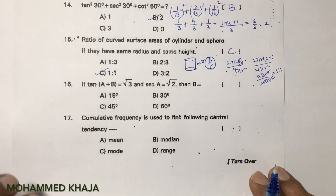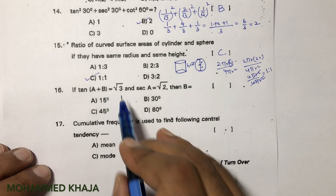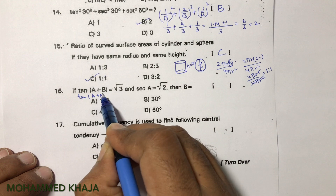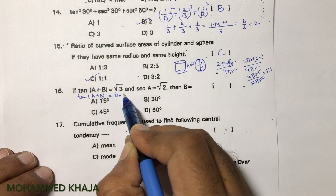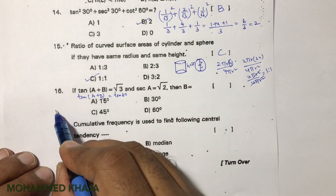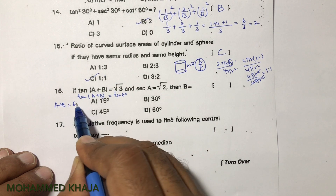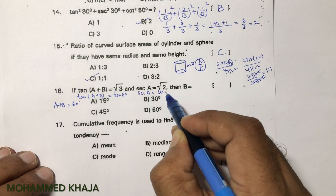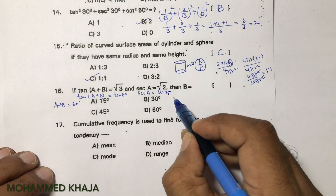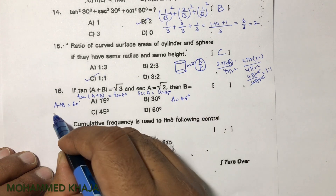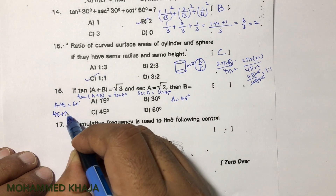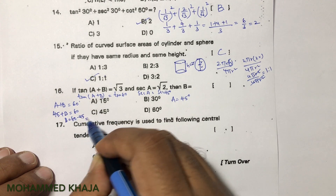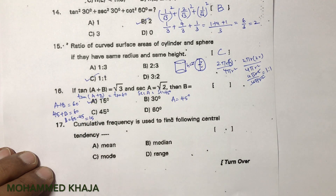tan(A+B) = √3, which corresponds to tan 60°, so A + B = 60°. Also, sec A = sec 45°, so A = 45°. Substituting: 45° + B = 60°, giving B = 60° − 45° = 15°. The correct option is A.